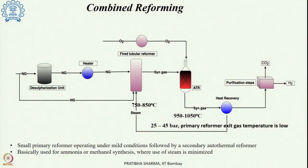In combined reforming we have a primary reformer, which is a smaller fire tubular reactor, and then we have a secondary reformer. The partially reformed gas from the primary reformer goes to the secondary reformer and we can get the desired gas composition.